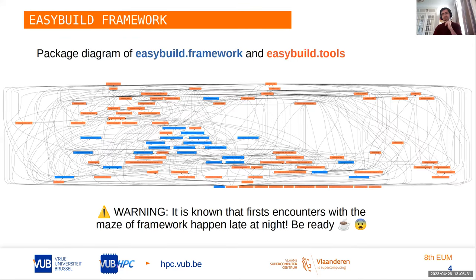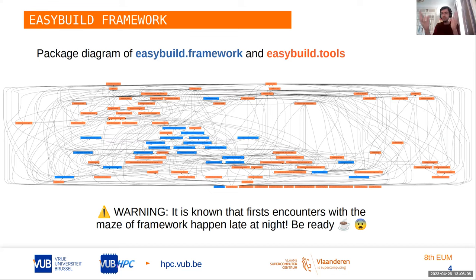This is framework — what you see here is a diagram of packages that form part of easybuild.framework and the easybuild.tools packages. There are many elements and many interactions between them, which is what makes it difficult to navigate through framework. You might get errors somewhere but the traceback might go very deep in the stack. In the middle in blue is the framework itself, and surrounding it is a constellation of modules from easybuild.tools — basically tooling and utilities around the machinery in framework.